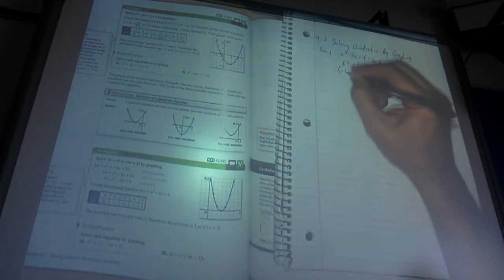Don't put those in parentheses, because it's not an ordered pair. The ordered pair answers would be negative one, zero, and then four, zero.